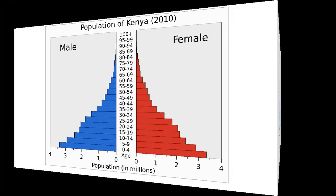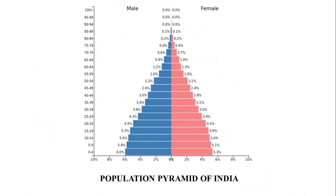The population pyramid of India is broad in the younger age groups. This shows that the birth rate and the death rate are decreasing. In such populations, a large number of people are young and capable of joining the workforce.